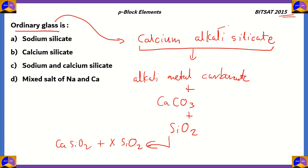That's why we call it calcium alkali silicate. Alkali refers to group 1, and since sodium is a part of group 1, the alkali metals group, the correct answer for this question must be option C, sodium and calcium silicate. The reason why option C is correct is because both of these compounds form in the formation of glass.